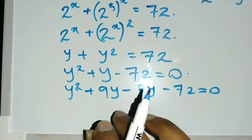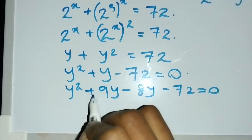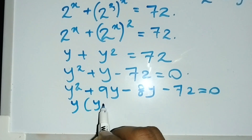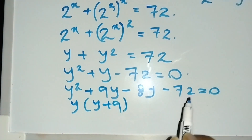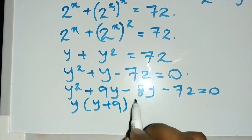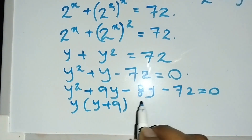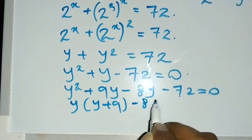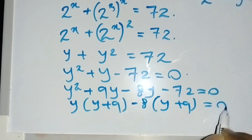I can factor by taking y out of the first two terms: y(y plus 9), and taking minus 8 out of the last two terms: minus 8(y plus 9) equals 0.